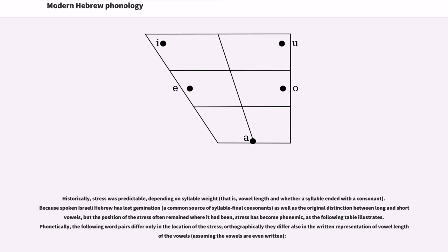Historically, stress was predictable, depending on syllable weight, that is, vowel length and whether a syllable ended with a consonant. Because spoken Israeli Hebrew has lost gemination, a common source of syllable-final consonants, as well as the original distinction between long and short vowels, but the position of the stress often remained where it had been, stress has become phonemic, as the following table illustrates. Phonetically, the following word pairs differ only in the location of the stress; orthographically they differ also in the written representation of vowel length of the vowels, assuming the vowels are even written.